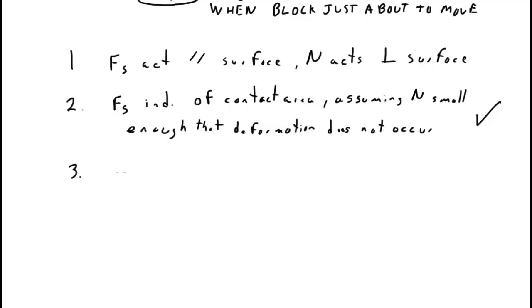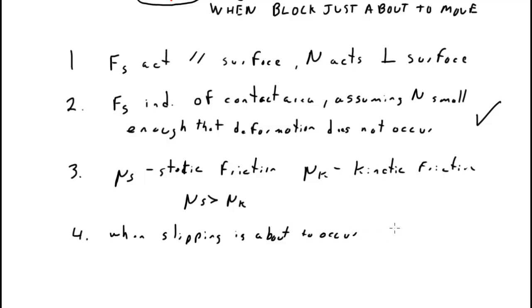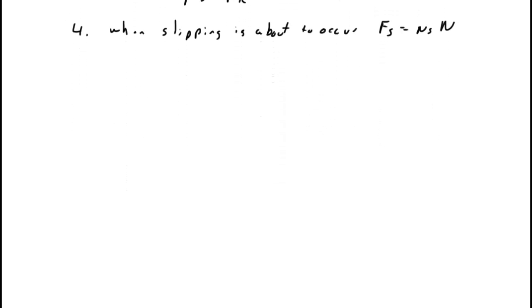The third thing we should point out is that we have two types of friction coefficient. So there's mu S, which is static friction. And there's mu K, which is kinetic friction. Since mu S is always just a little bit greater than mu K, what that means is that when slipping is about to occur, FS equals mu S times N.